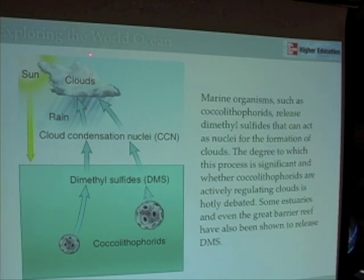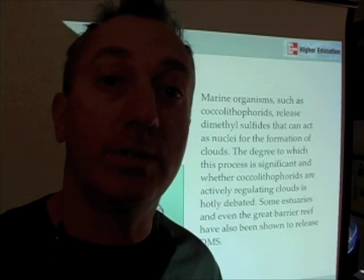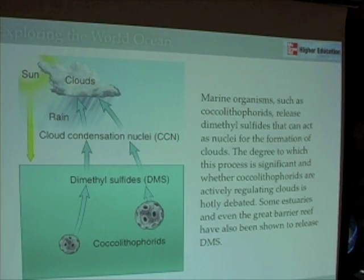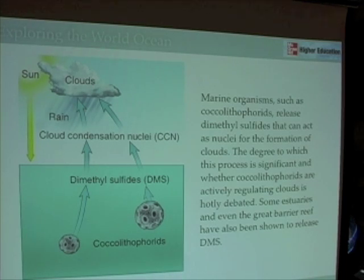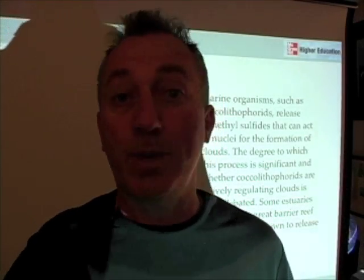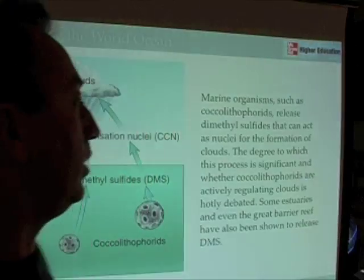When we get clouds, we get less sunlight. And when we get less sunlight, the coccolithophorids grow more slowly, producing less dimethyl sulfides, giving us less cloud condensation nuclei, fewer clouds, and then more sunlight again — at which point the coccolithophorids start growing again, producing more dimethyl sulfides and more CCN, and then we have more clouds. This is an example of negative feedback, where the coccolithophorids regulate cloud formation and thereby regulate their own rates of growth. This is a hotly debated topic, but it's certainly an intriguing one that scientists will continue to investigate.